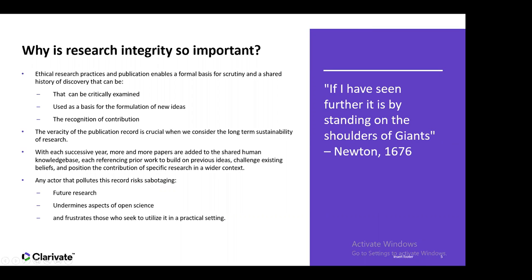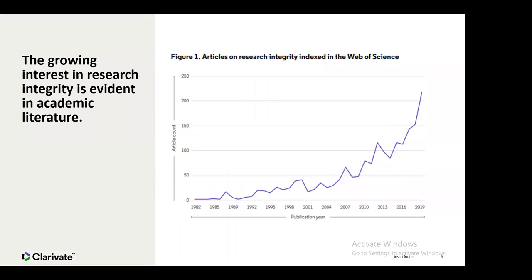Looking at the Web of Science, we can see that the area of research integrity is very much a topic of rising interest within the academic community itself. Going back to 1982, you can see a sharp rise in terms of publications produced around research integrity, because it is obviously becoming a hot topic for academia — and rightly so.